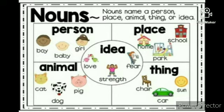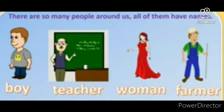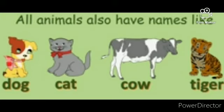Do you know children, nouns are also called naming words. Mother, father, cow, pig, table, book and school. There are so many people around us. All of them are having names like boy, teacher, woman and farmer. Some places around us are also having names like park, hospital, church and office and many more. All animals also have names like dog, cat, cow and tiger and many others.